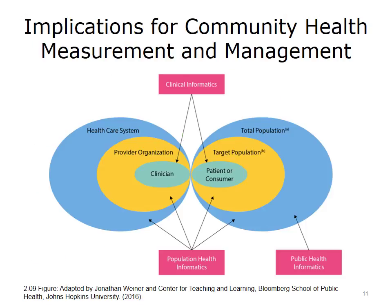This is a graphic that provides a paradigm for the differences between clinical informatics and public health informatics, and the focus of this component — population health informatics. Clinical informatics can be considered the application of health information technology and other big data sources, primarily in support of the clinician, be it doctor or nurse, for the care delivery process. Public health informatics focuses primarily on the application of health IT in support of government programs targeted at geographic jurisdictions. The growing new field of population health informatics cuts across both the community and health care system to focus on populations of individuals and providers who may or may not be defined based on geography.